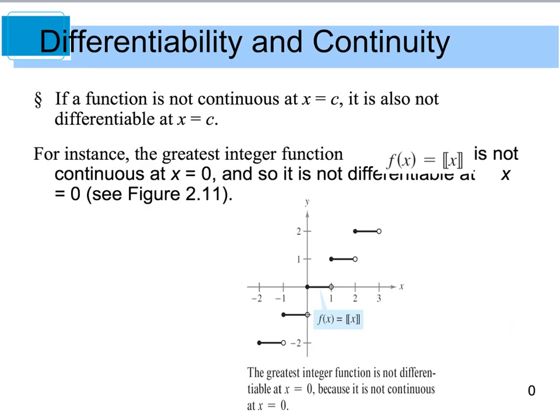If you look at this greatest integer function, like if I want to look at x equals 0, which is right here, I see that my graph has a discontinuity. I'm going from here all the way up to here. So I'm not going to be able to differentiate this function at x equals 0.